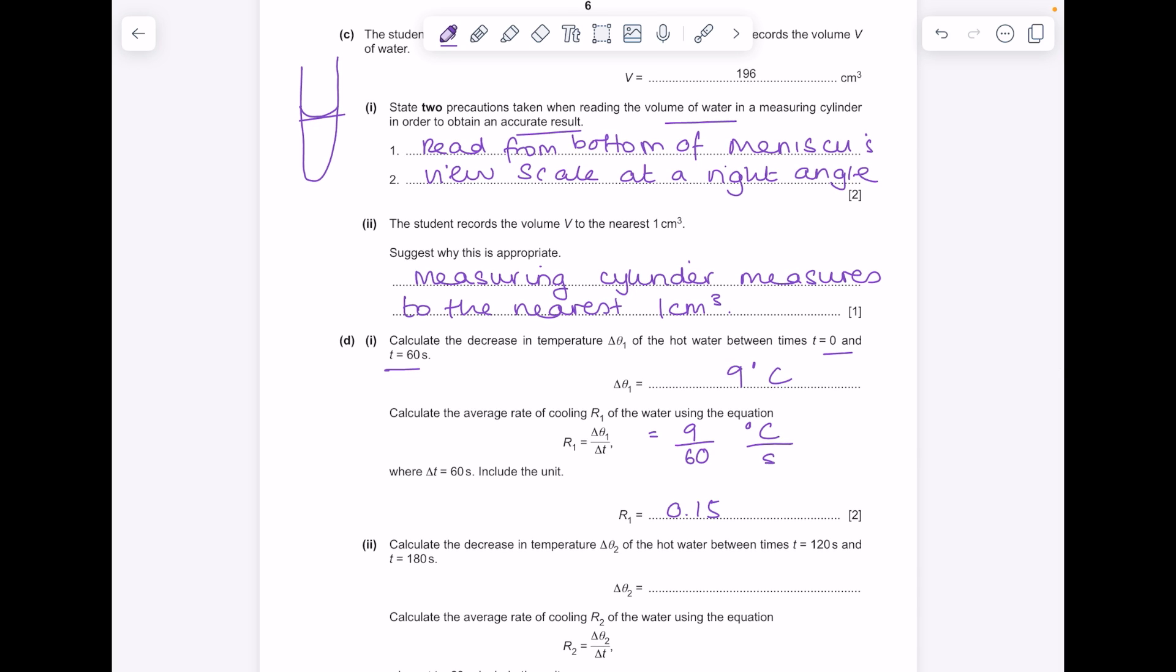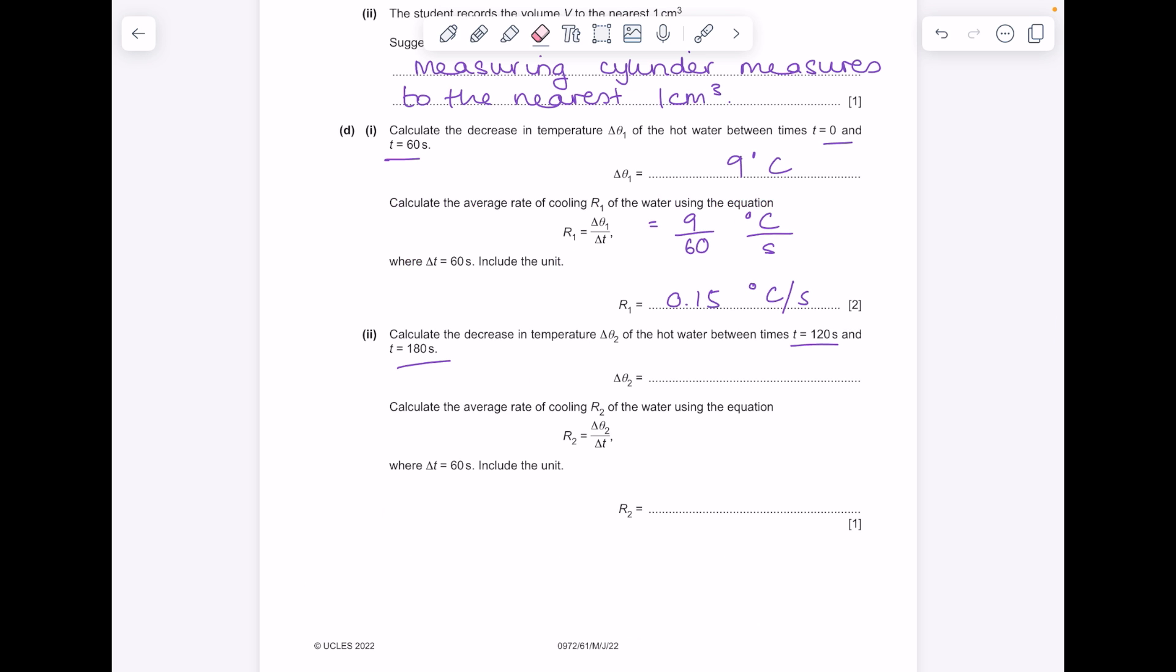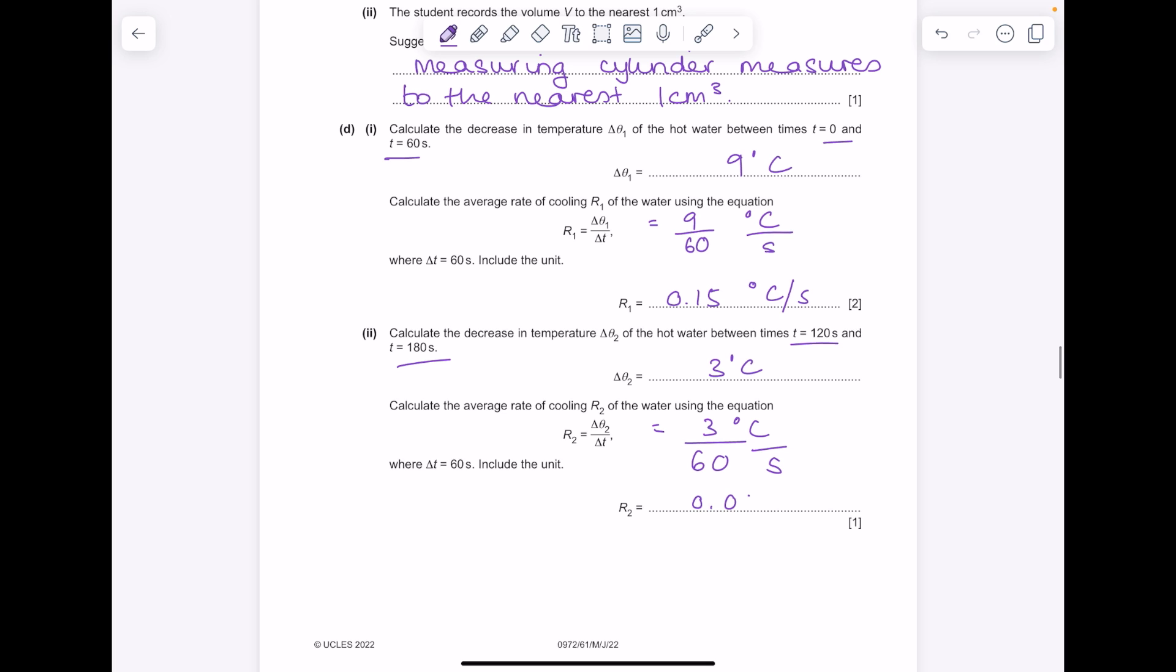Calculate the decrease in temperature between times 120 and 180 seconds. So that was 3 degrees. Calculate the average rate of cooling. So we take that 3 and divide it by our time frame which was 60 to get 0.05 degrees Celsius per second. There's our answer.